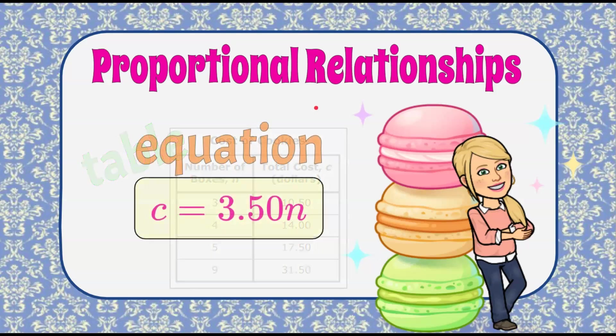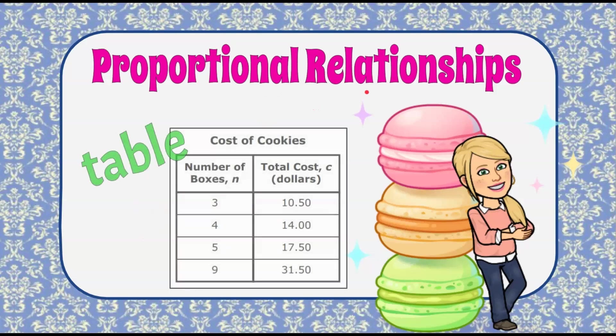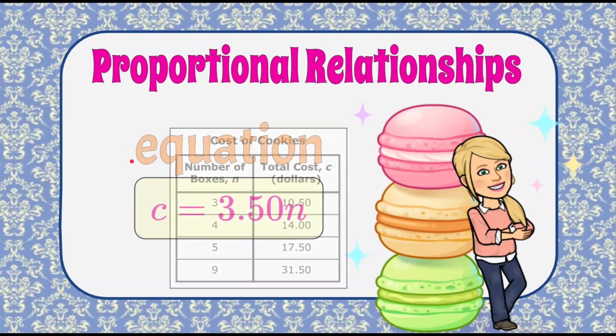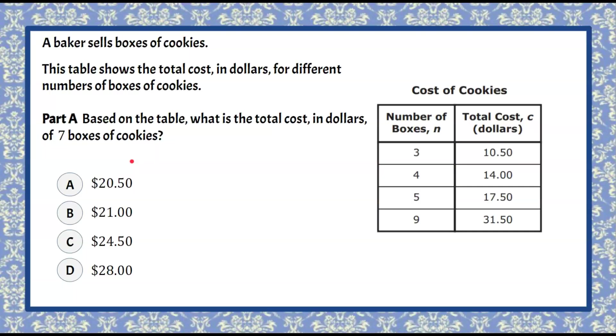It's the Magic of Math here and today we're talking about proportional relationships with tables and equations. Here's our question today. A baker sells boxes of cookies. This table shows the total cost in dollars for different numbers of boxes of cookies. So here's your table of values.